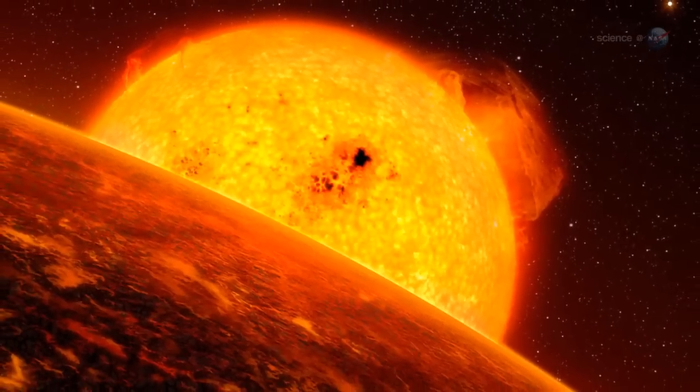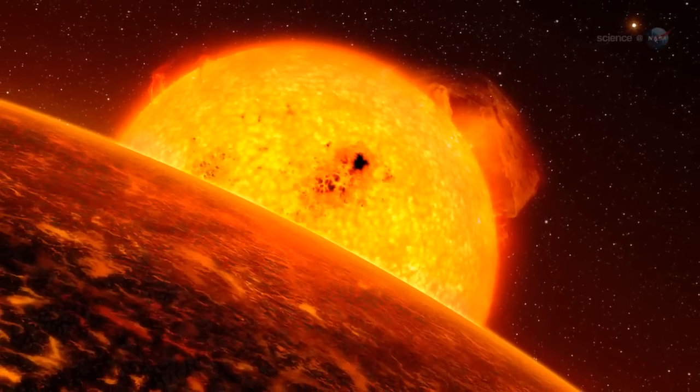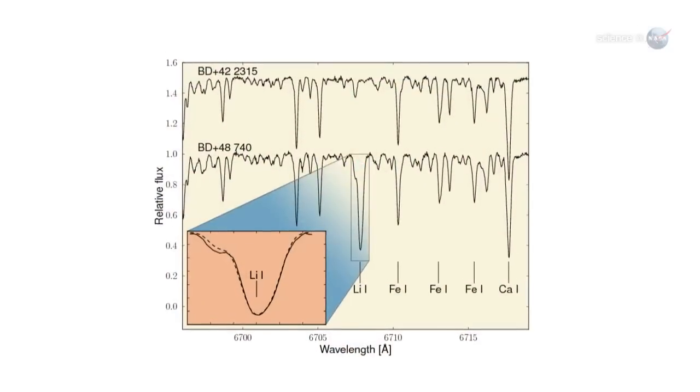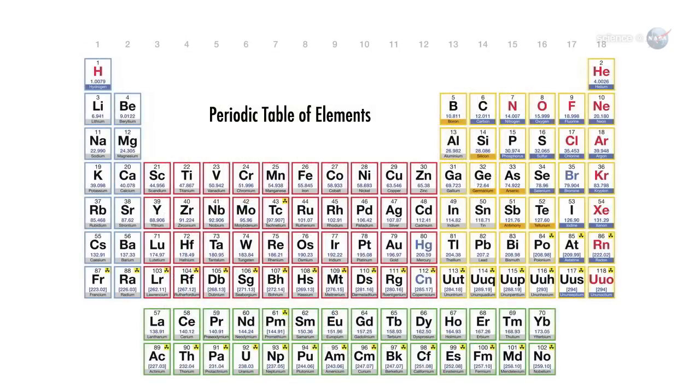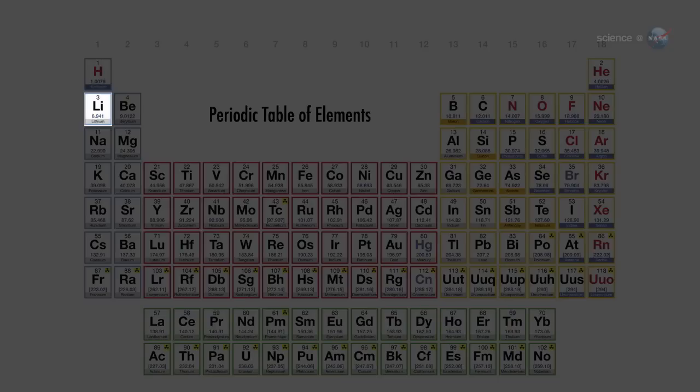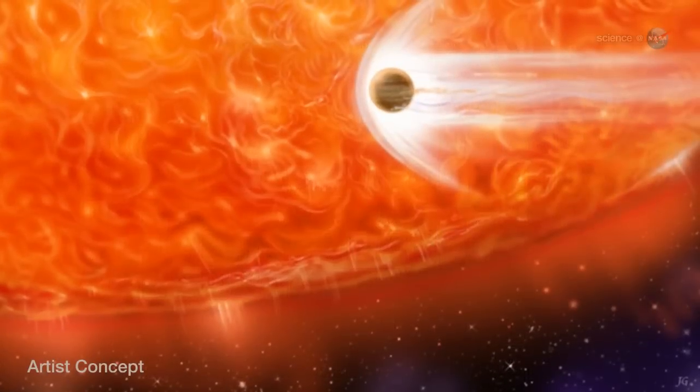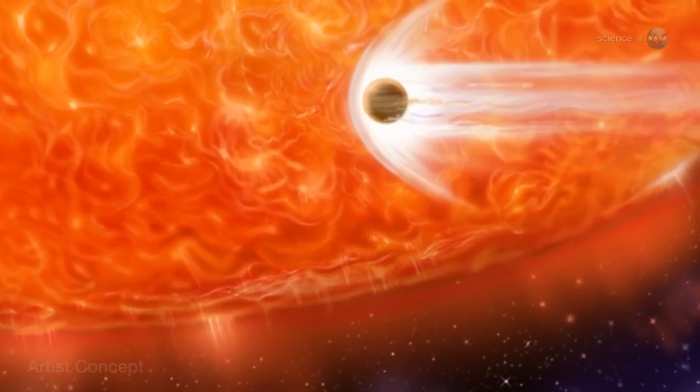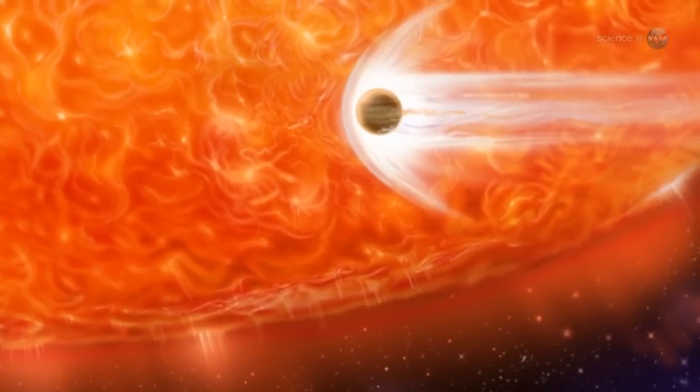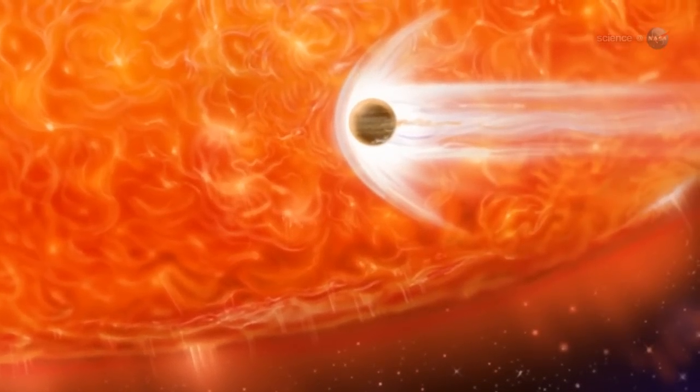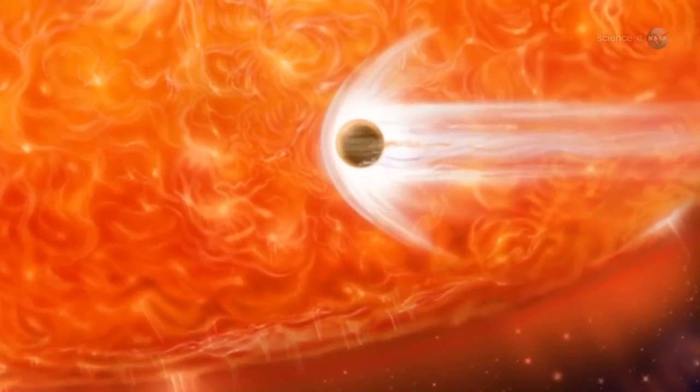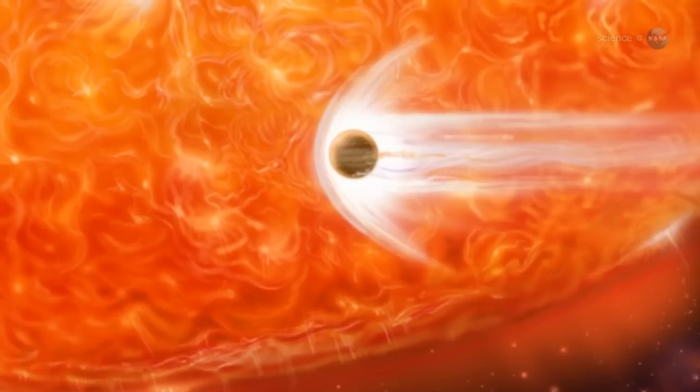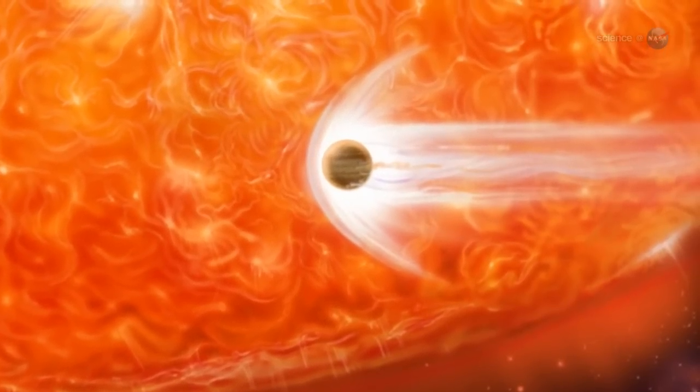Observations of red giant BD+48740 lend credence to the second possibility. Our detailed spectroscopic analysis of BD+48740 reveals that the red giant contains an abnormally high amount of lithium, says Monika Adamow, who led the study at Nicholas Copernicus University in Torun, Poland. Because lithium is easily destroyed in stars, finding lots of it in an old red giant is unexpected. The most likely source is a planet. Wolszczan explains, it is probable that the lithium production in BD+48740 was triggered by a mass the size of a planet that spiraled into the star and heated up while the star was digesting it.